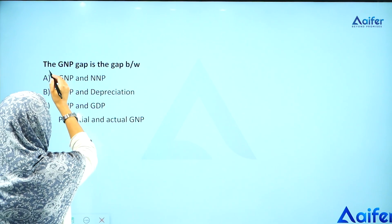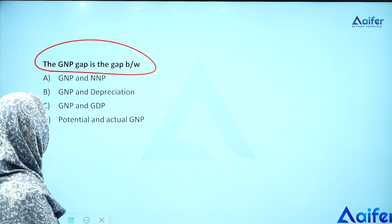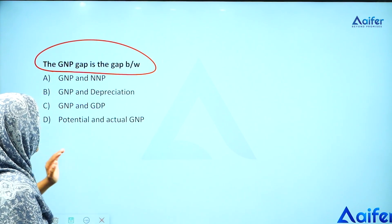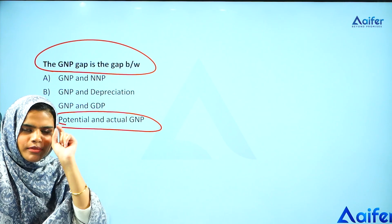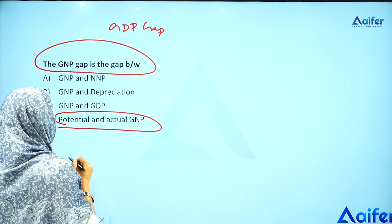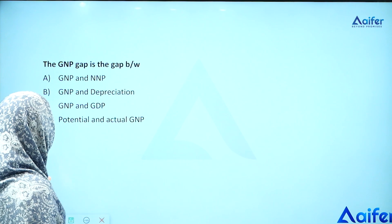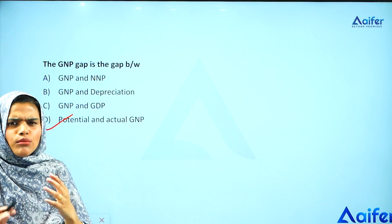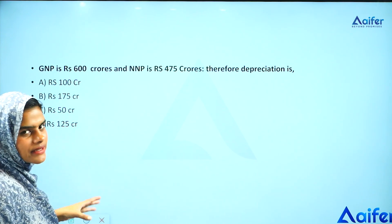GNP gap — what is it the gap between? This is a previous year UGC question. The GNP gap is nothing but the gap between potential GNP and actual GNP. Similarly, the GDP gap is the gap between potential GDP and actual GDP. The answer is option D: potential and actual GNP.